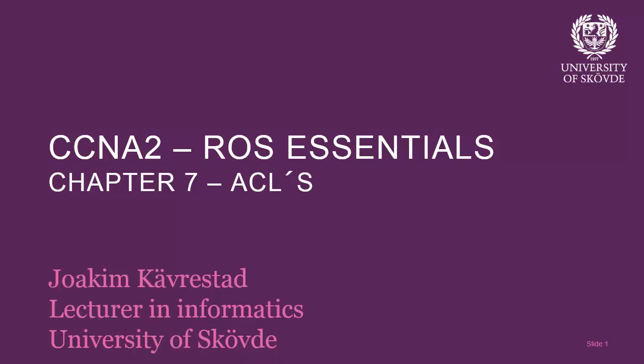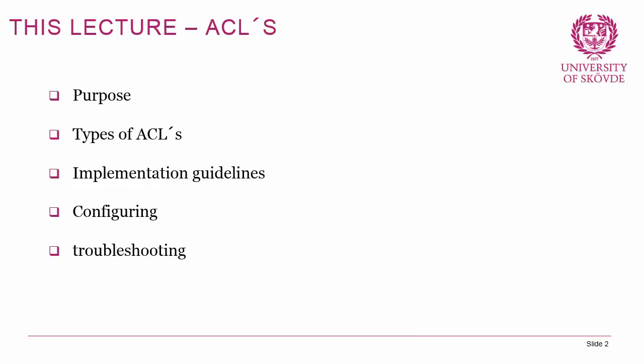Hello and welcome back to chapter 7 of the CCNA2 lecture series, Routing and Switching Essentials, with me Joakim Sjövrestård from the University of Skövde. The topic of this lecture is access control lists, or ACLs. This is one of the more interesting parts of networking because we get to work with security. It's also the final very tough part of this course, so from here on it gets easier.